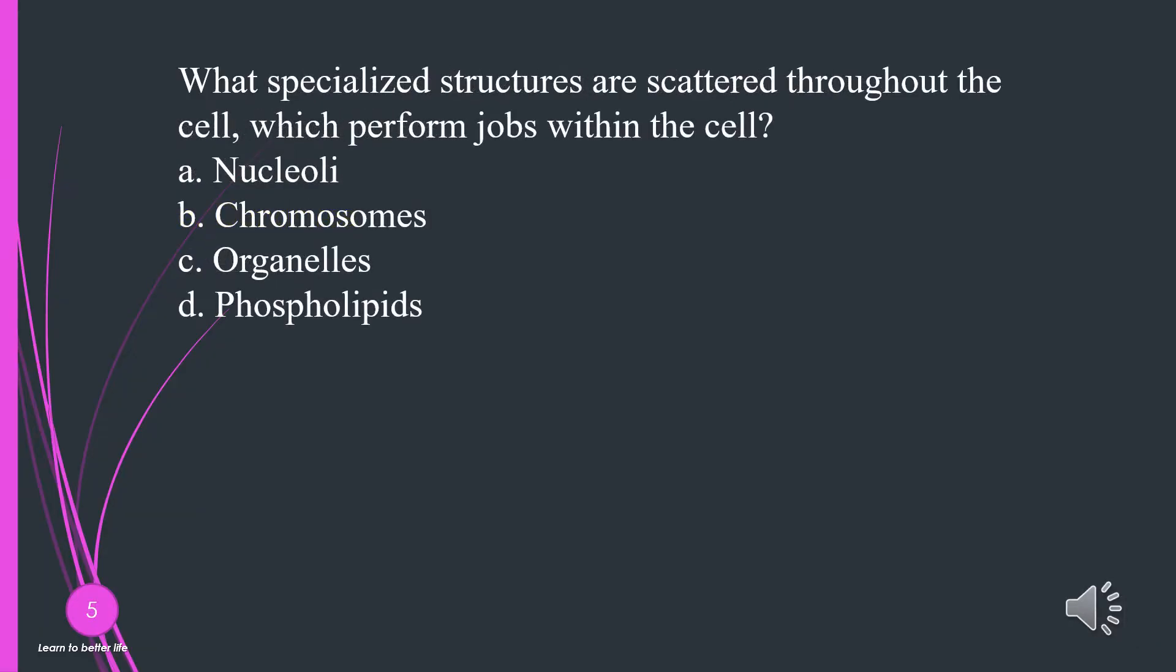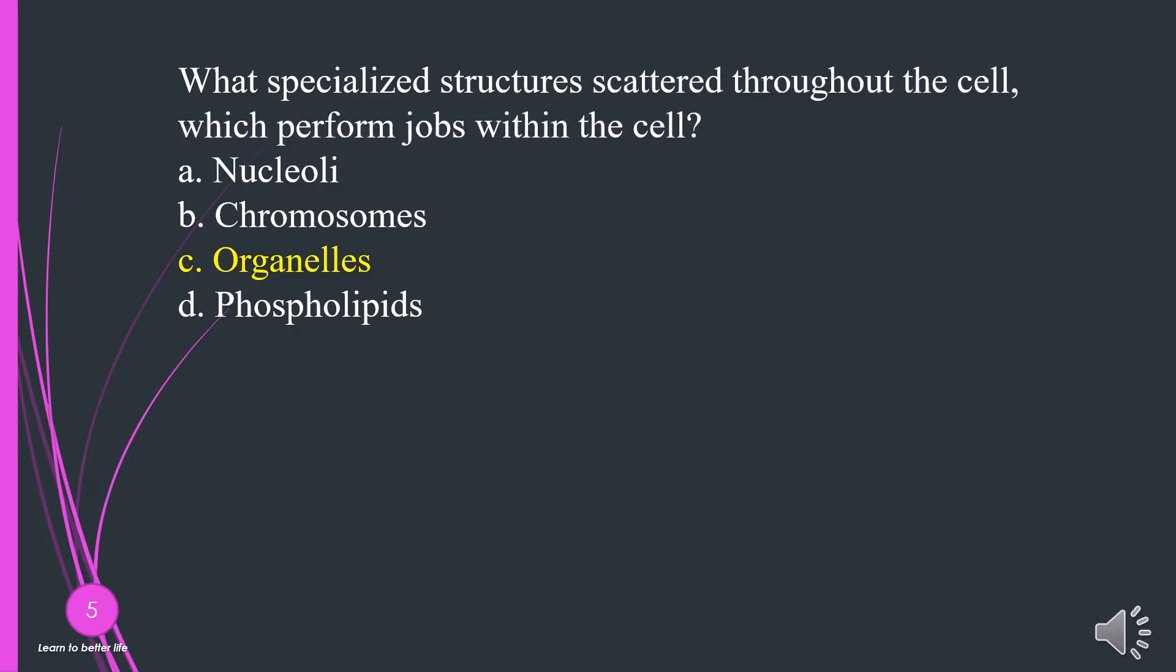What specialized structures are scattered throughout the cell which perform jobs within the cell? A. Nucleoli. B. Chromosomes. C. Organelles. D. Phospholipids. The answer is C, organelles.